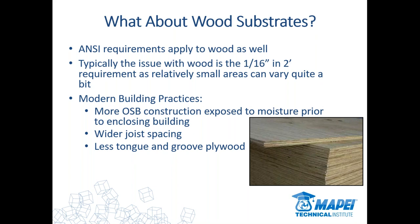Talking about wood substrates — essentially it's the same. You're still looking for flatness, but that sixteenth of an inch in two feet is the real trick on wood, because now you're getting into a smaller area. Instead of talking about an eighth over 10 feet, you're talking about a sixteenth in two feet because of joist spacing. Running a straight edge over those small areas, it's very easy to get a variation that exceeds a sixteenth of an inch. There is still a flatness requirement on wood substrates — you still need a flat floor if you're going over wood.